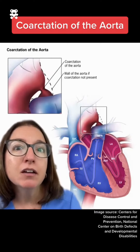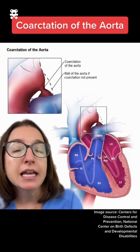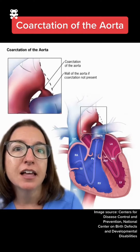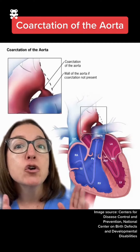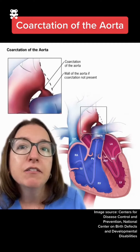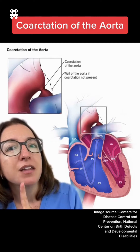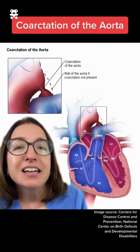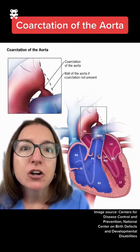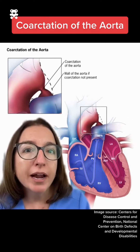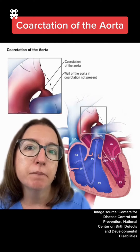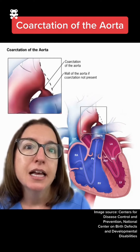Coarctation of the aorta, or COA, is a congenital heart defect that causes stenosis or narrowing of the aorta, as you see here. This narrowing occurs after arteries branch off the aorta to supply blood to the upper extremities.